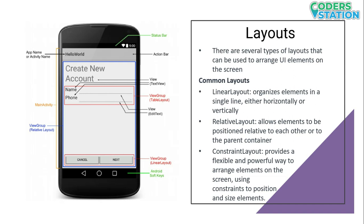The next important thing is layouts. Using a layout, we can arrange the components or views on a particular screen. Whatever UI elements we have — like a TextView, EditText, or a Button — if we want to arrange these components, we have to use a layout. There are some common layouts which I have listed here.